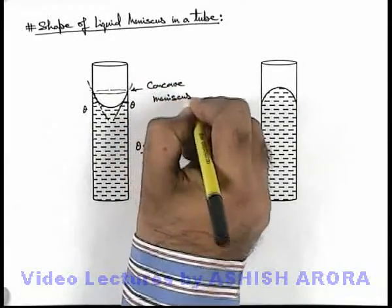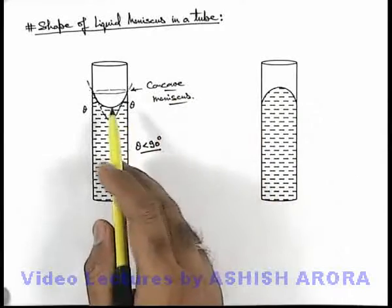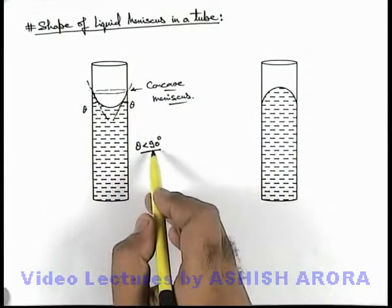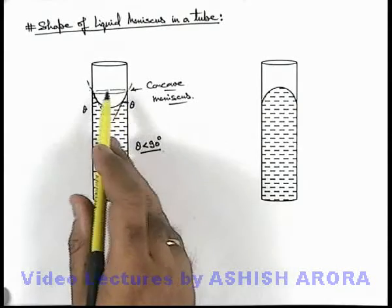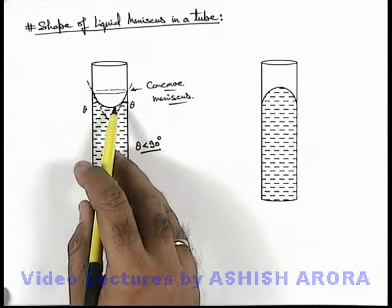When the angle of contact for a liquid with a solid is less than 90 degree, then in a tube made up of that solid when the liquid is filled, a concave meniscus is obtained.